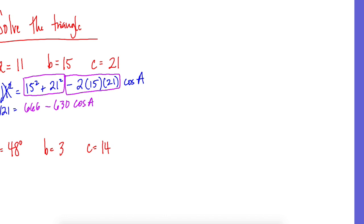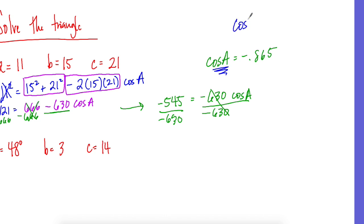Now, what I have to do, this negative 630 is attached to cosine A, so you can't do 666 minus 630. We have to subtract this over first, and we'll move this over here. So 121 minus, we get negative 545 equals negative 630 cosine A. That's how it has to look. Now we will divide by negative 630 to get cosine A by itself, so divided by 630. And then what you're going to do is you're going to take cosine A equals negative 0.865. Remember, we're solving for an angle, so we use the inverse. So cosine, and we get 149.9, so A equals 149.9.